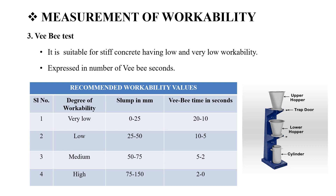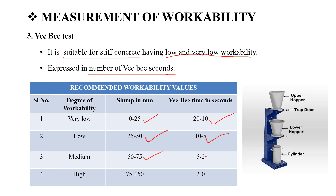The next test is the VB Test, which is most suitable for very dry concrete mixes. The VB Test is measured in VB seconds and is normally used in the lab. The table of values: very low workability has a slump of 0 to 25 mm with VB time of 20 to 10 seconds. Low workability has a slump of 25 to 50 mm with VB time of 10 to 5 seconds. High workability has a slump of 75 to 150 mm with VB time of 2 to 0 seconds.